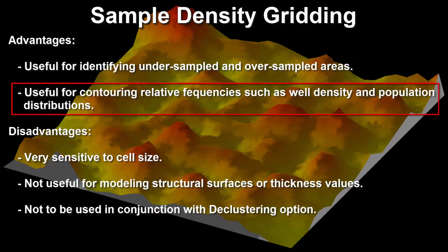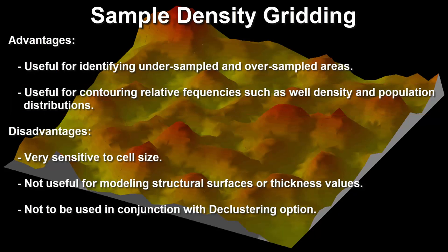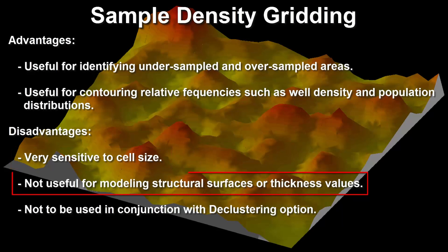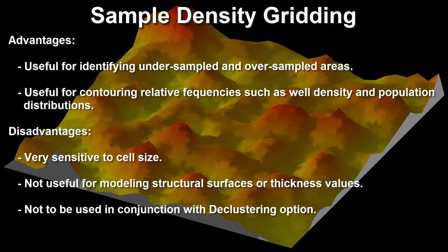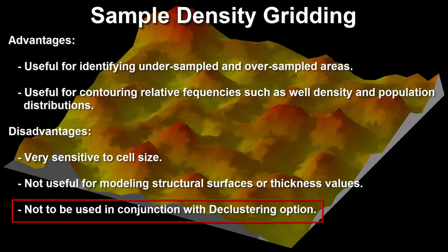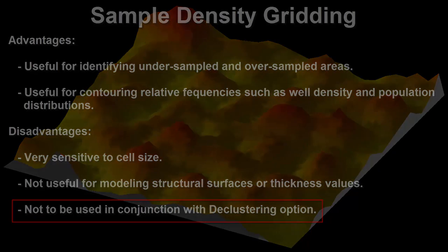It's useful for contouring relative frequencies such as well density and population distributions. The disadvantages are that it's very sensitive to the cell size, it's not useful for modeling structural surfaces or thickness values, and it should not be used in conjunction with the declustering option.